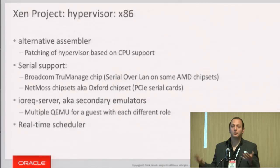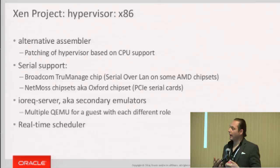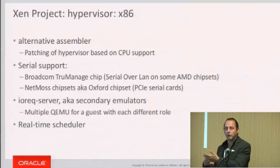As developers, we need serial port support. When we find bugs and work on new platforms, we need serial support so we can type commands and figure out where things are going wrong. We've also added alternative assembler support, which allows you on different CPUs to rewrite the hypervisor code so that if you're running on a newer machine you take advantage of those operations, and if not, you won't have an impact on hypervisor performance speed.